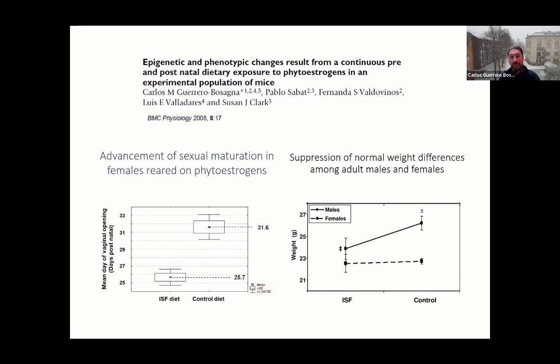Considering that the normal age to reach reproduction is around 30 to 32 days, six days represents a large percentage of the total days required to reach the reproductive stage.